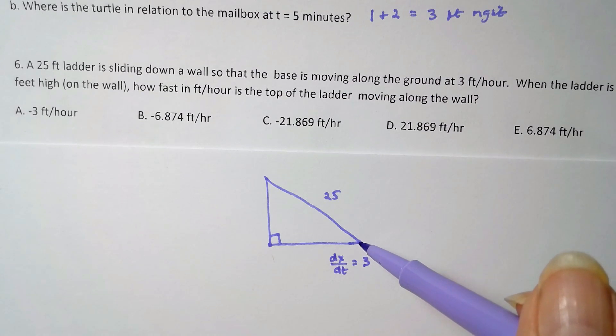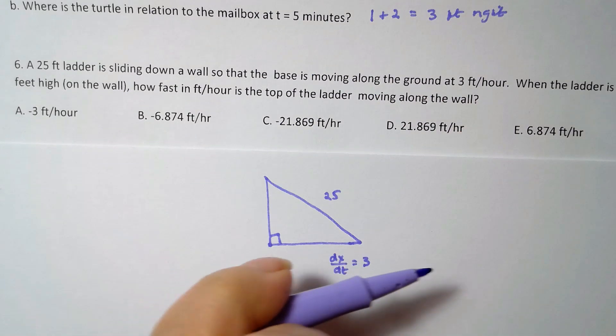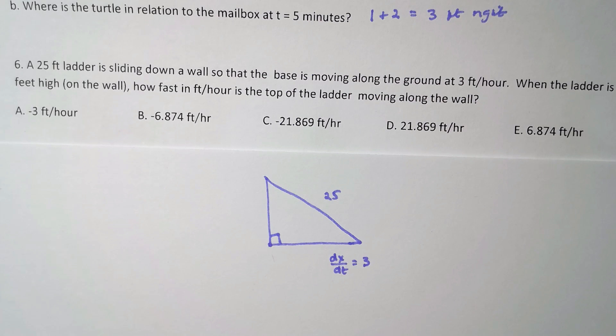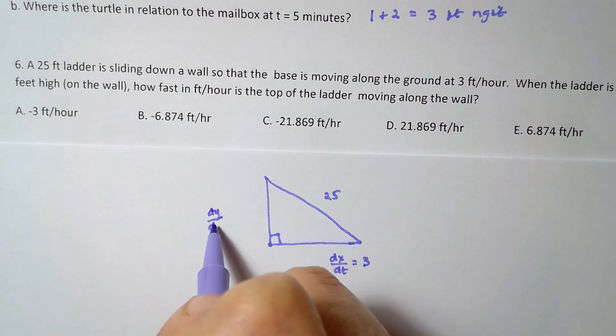But if we were pushing the bottom in toward the wall, that would be a negative. But it's not, this ladder's sliding down the wall, and so this right here for x has to be in this direction. Okay, when the ladder is 10 feet from the wall, how fast is the top of the ladder moving along the wall? So I'm trying to find dy/dt when y is equal to 10.